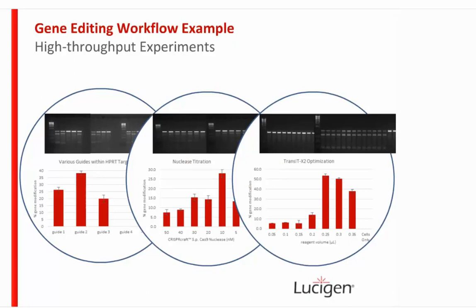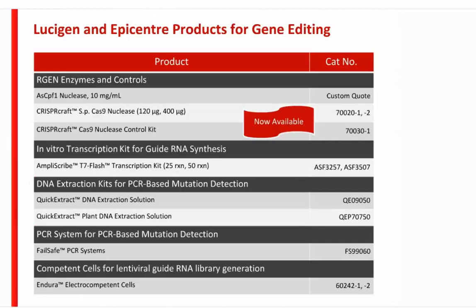To summarize the products available from Lucigen for gene editing: CPF1 available for custom order; CRISPR-Craft Cas9 nuclease and its control kit; the Ampliscribe transcription kit for guide RNA synthesis; QuickExtract solutions for genomic DNA production; Failsafe PCR systems for PCR-based mutation detection; and Endura competent cells for lentiviral guide library generation for genome-wide screens.